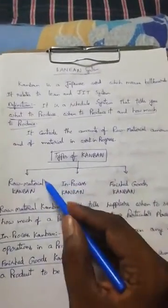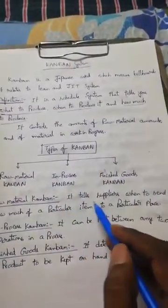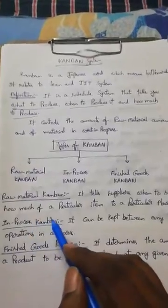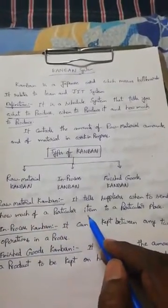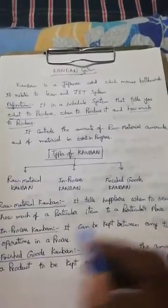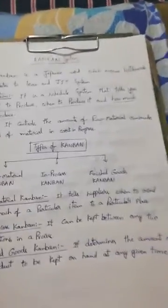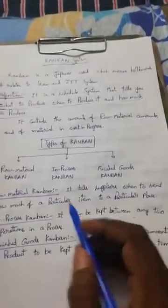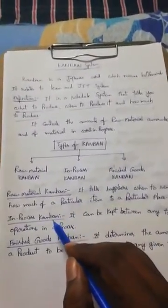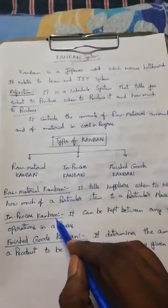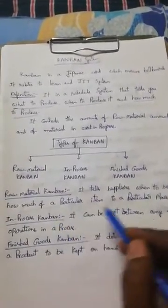In Raw Material Kanban, it tells the supplier when to send and how much of particular items — that is, raw materials — to a particular place. It identifies what kind of raw materials are required, and these can be collected from different products.